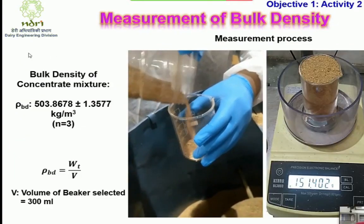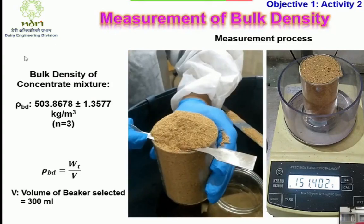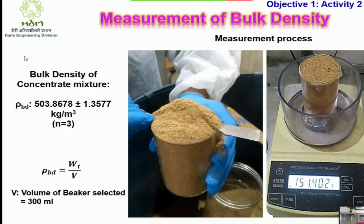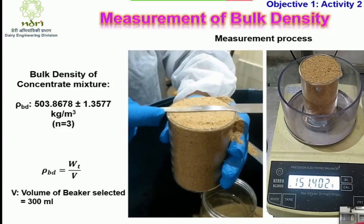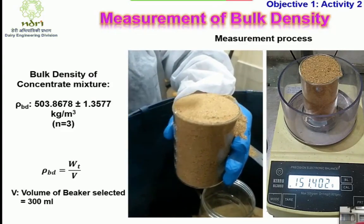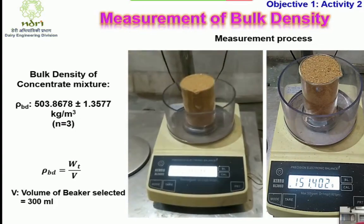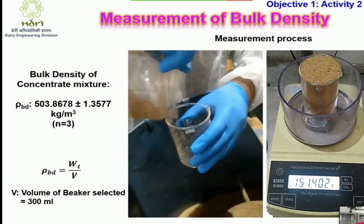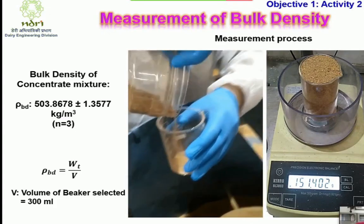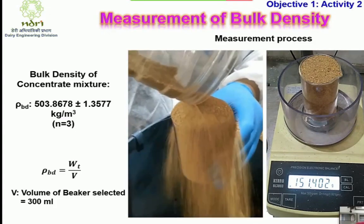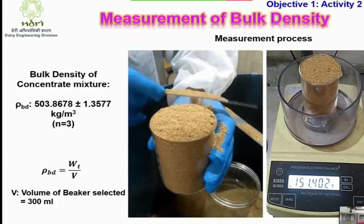Measurement of bulk density, which was Activity 2 of Objective 1, was then carried out for the concentrate mixture. The bulk density was found to be 503.8678 kg per meter cube.